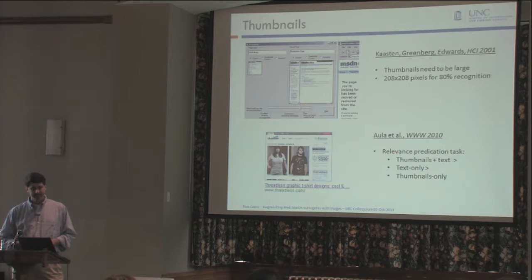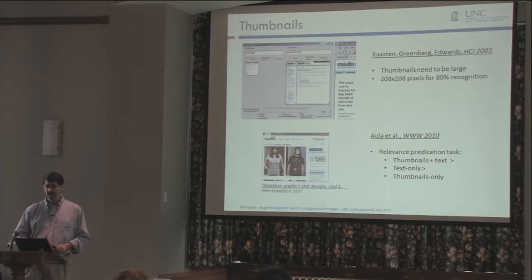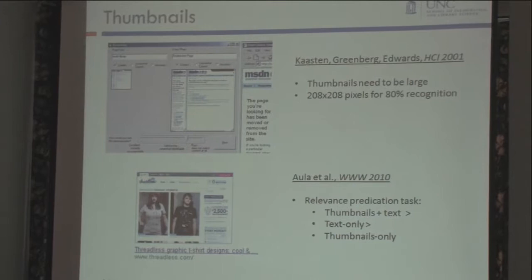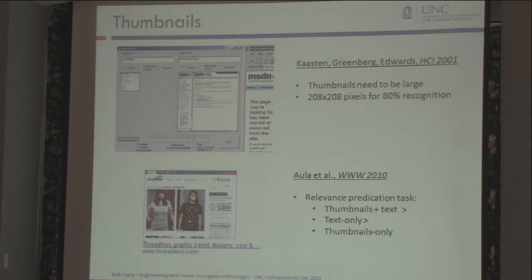In terms of thumbnails, people have been looking at these for a long time. There was great research done in the early 2000s looking at how big thumbnails need to be so you can actually figure out what they're about. Caston, Greenberg, and others found that thumbnails have to be about 200 by 200 pixels to actually recognize them. Ann Ola did work looking at how well thumbnails could be used as part of a search surrogate, and found that thumbnails plus text did better than text only, while thumbnails alone actually did the worst.